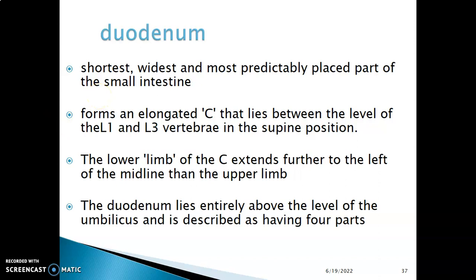The duodenum is actually the shortest part of the small intestine and also the widest. It's the most predictably placed part of the small intestine — so generally it's the shortest, widest, and most predictably placed of the small intestine.